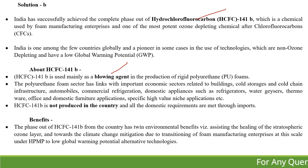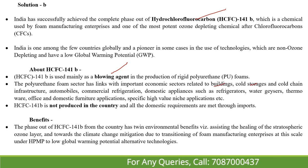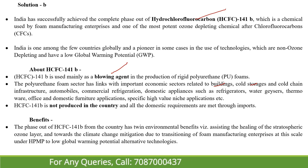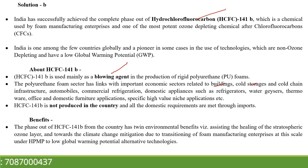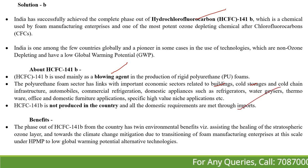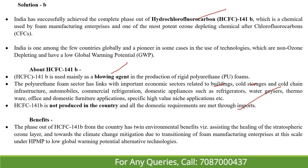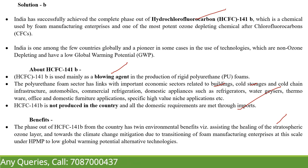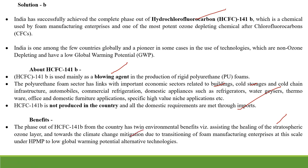CFC-141B is used in making foam, which is used across multiple sectors — in buildings, cold storage, cold chains, infrastructure, and even in our refrigerators and water geysers. India has phased this out, although India did not produce it domestically — all domestic requirements were met through imports. The benefits of phasing it out are twofold: it will help heal the stratospheric ozone layer, and it will also aid climate change mitigation by promoting low-global-warming-potential technologies in India.